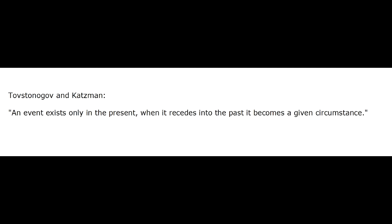From here we witness an infinite chain: event, action, event, action, event. Every single unit of time we live in a certain event. But what is the difference between an event and given circumstances? An event exists only in the present. When it recedes into the past, it becomes a given circumstance. But basically, an event is a given circumstance that changes the line of behavior.